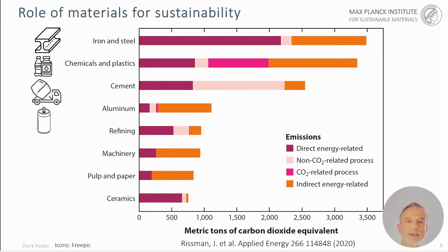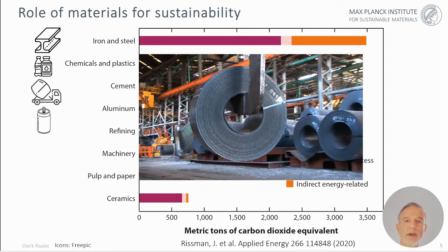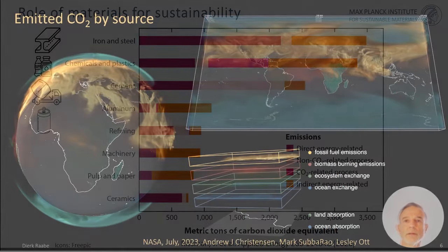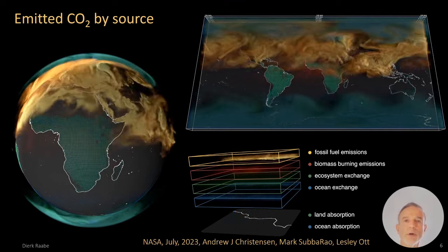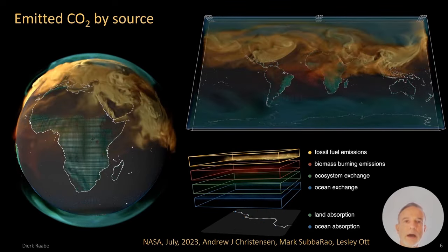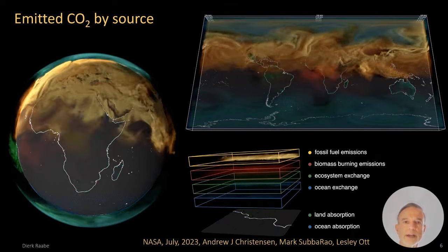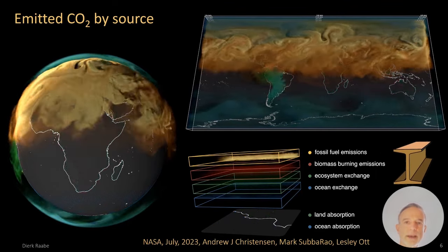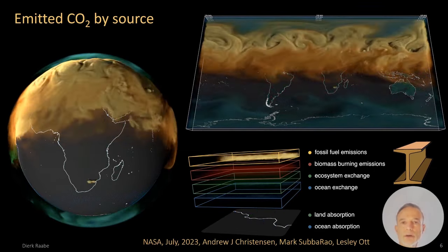This also explains why iron and steel production is nowadays the biggest single contributor to global carbon dioxide emissions, standing even before the production of plastics and petrochemicals, aluminum, or concrete. This enormous influence becomes visible when we look at the recent results of the NASA Carbon Observatory — a coupled experimental and simulation endeavor that aims to show and visualize the enormous carbon dioxide emissions around the globe. The production of metals, particularly the nearly 2 billion tons of steel produced every year, is the biggest single contributor to this scenario.